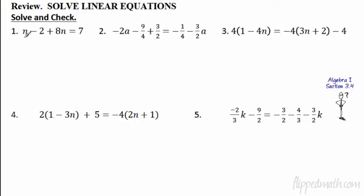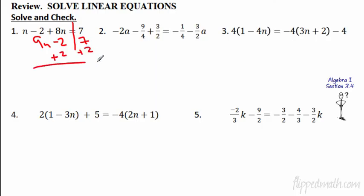The first one: n minus 2 plus 8n equals 7. I'm going to combine like terms first. In algebra we always draw a line down the equal sign. We're going to have 1n plus 8n — that's 9n — minus 2 equals 7. This is a two-step equation. Add 2 to each side: 9n equals 9, so n equals 1. Please make sure you put a little circle or box around your answer.